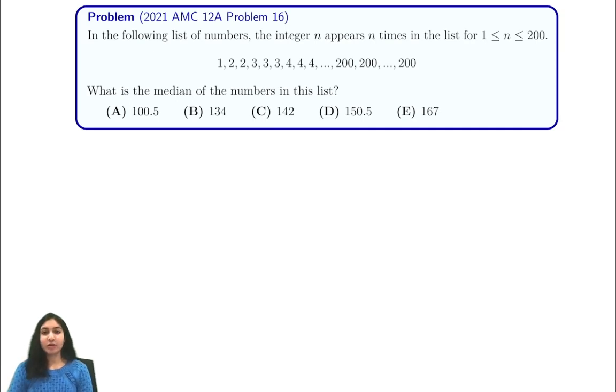Hi everyone! In this video, we're going to be going through 2021 AMC 12A problem 16. It tells us that in the following list of integers, the integer n appears n times for numbers between 1 and 200.